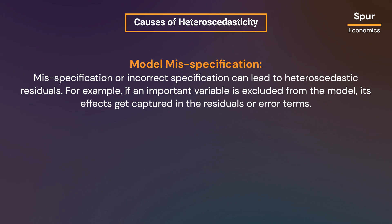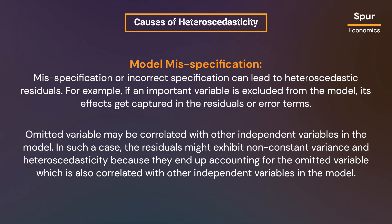Misspecification or incorrect model specification can lead to heteroscedastic residuals. For example, if an important variable is excluded from the model, its effects get captured in the residuals or error terms. The omitted variable may be correlated with other independent variables in the model, causing the residuals to exhibit non-constant variance and heteroscedasticity, because they end up accounting for the omitted variable.